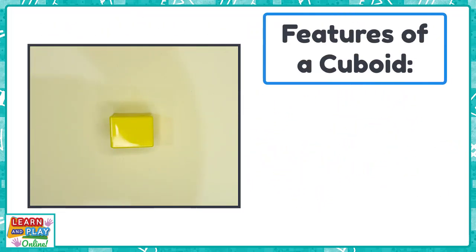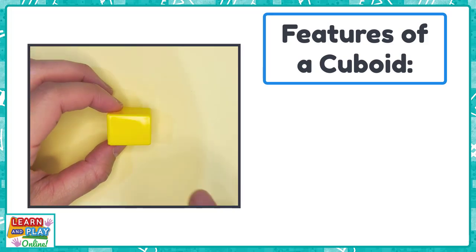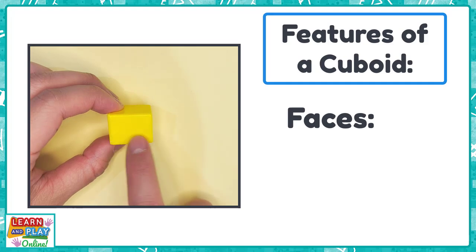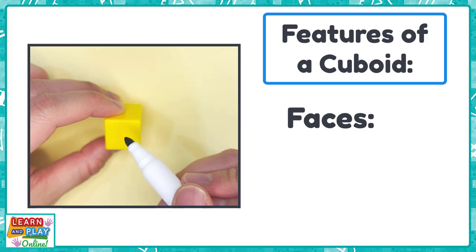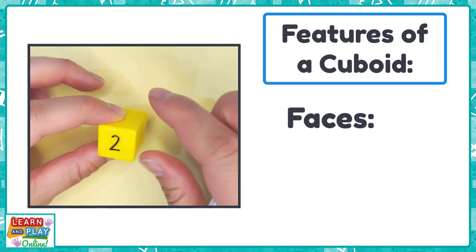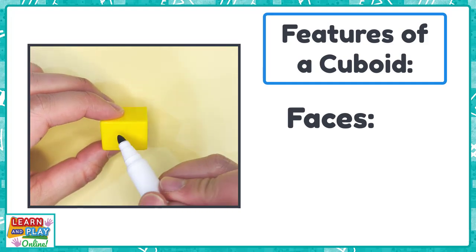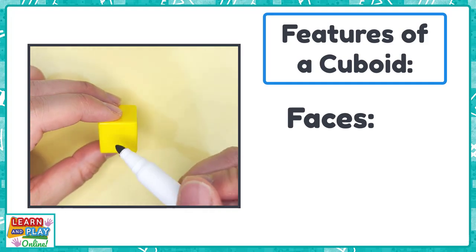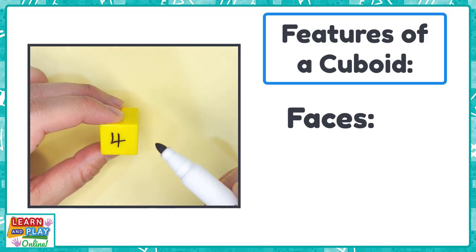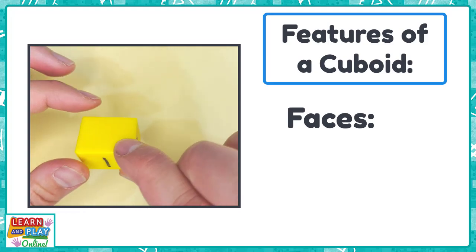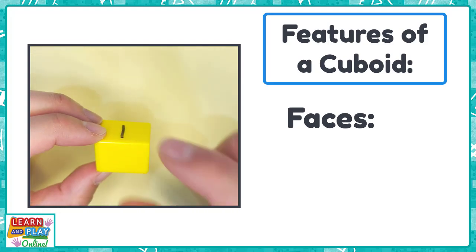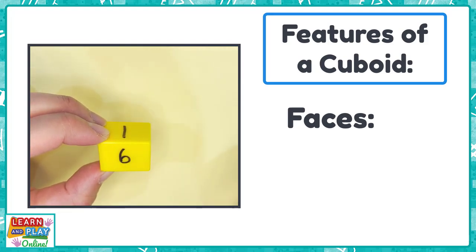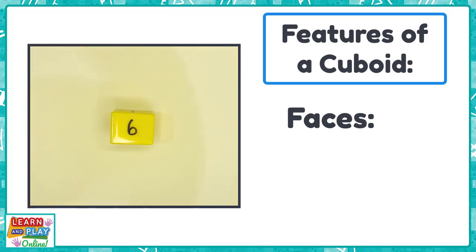We are now going to be looking at the features of a cuboid. The first thing we will be looking at is how many faces a cuboid has. 1, 2, 3, 4, 5, and 6. A cuboid has 6 faces.